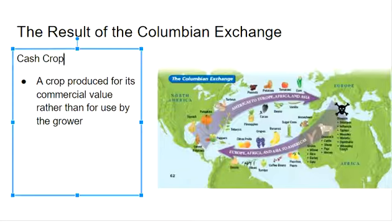But also, cash crops were goods that were in Europe but now have the space to grow in the Americas, such as sugar cane, wheat, rice, and coffee beans.